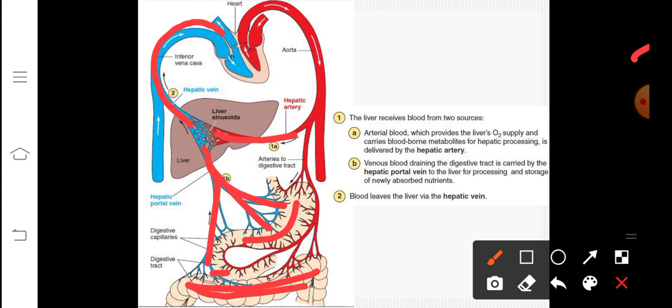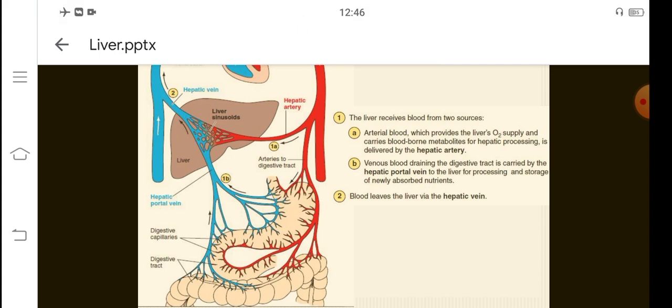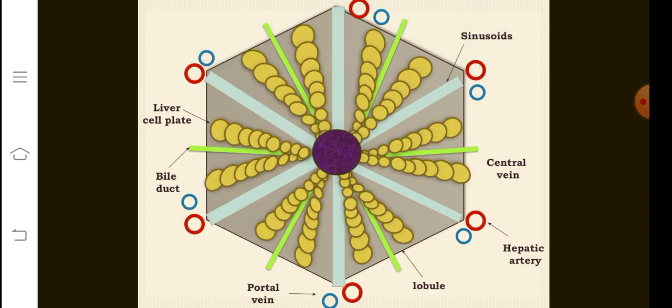The hepatic artery carries oxygen to the liver, and the deoxygenated blood leaves the liver through the hepatic vein, which later enters into the inferior vena cava.